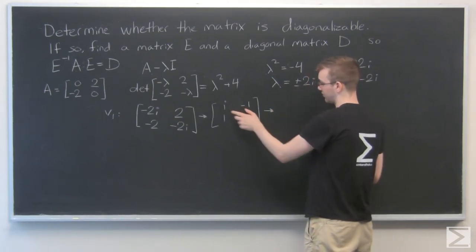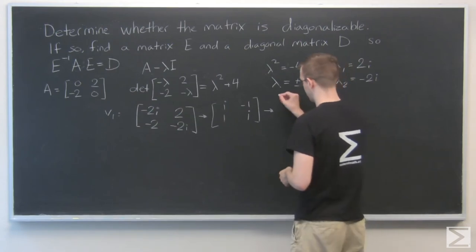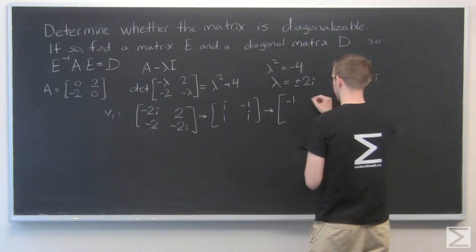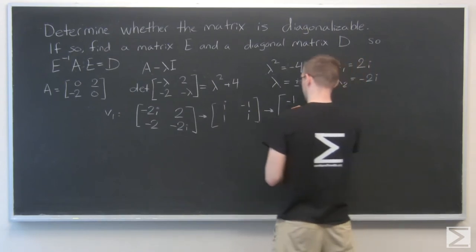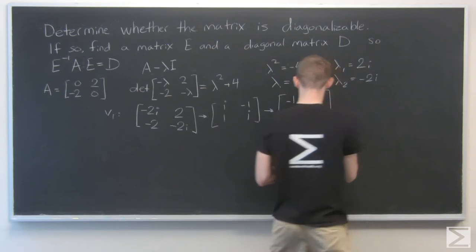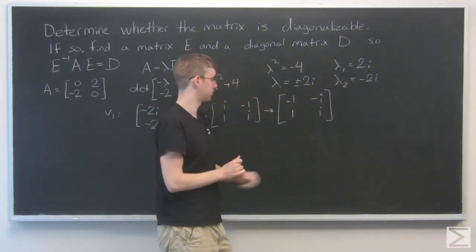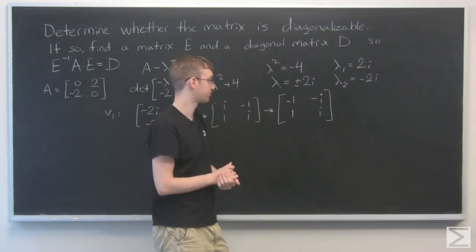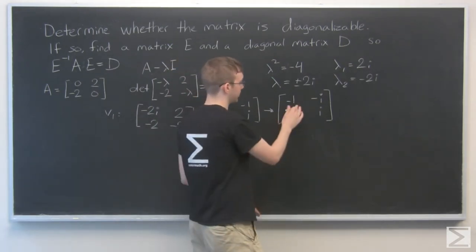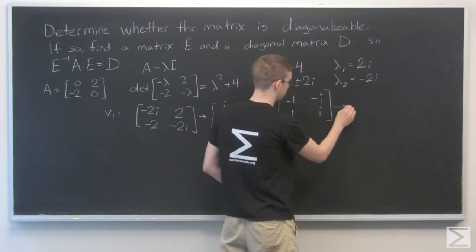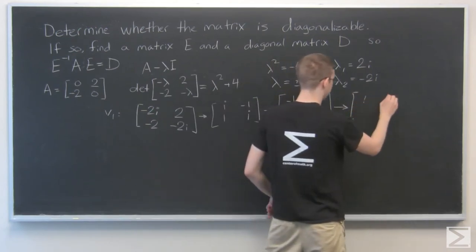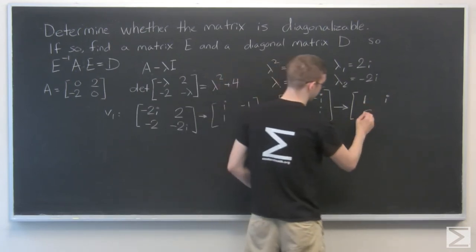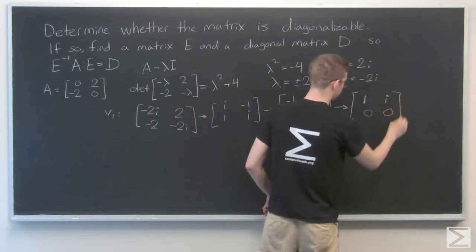I'm going to start by multiplying the top row by i. I know that i times i is negative 1, and I know that negative 1 times i is going to be negative i. So what I have here is just negative 1 times that row. So I'll multiply this one by negative 1 to get 1 and i. And I can use that to get rid of this last row, so 0, 0. Cool.